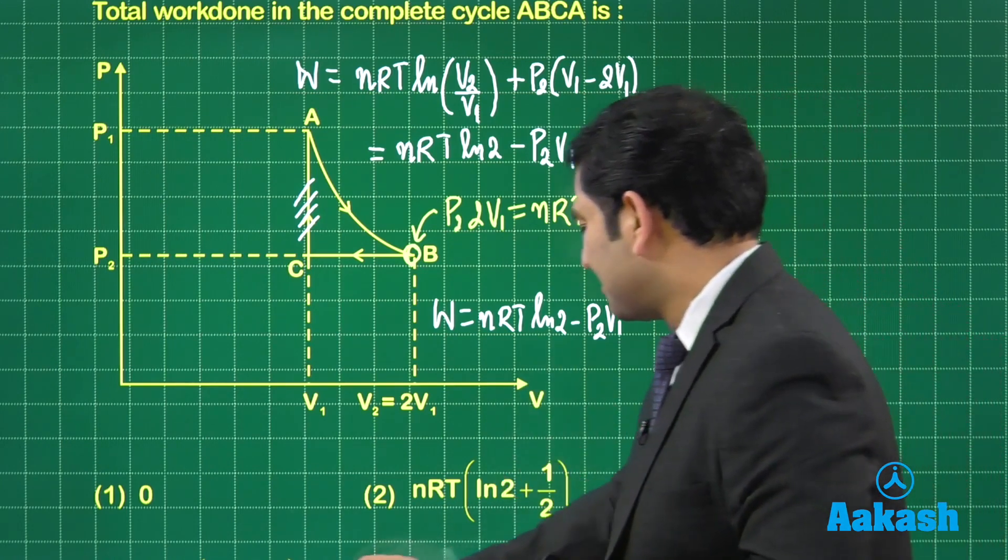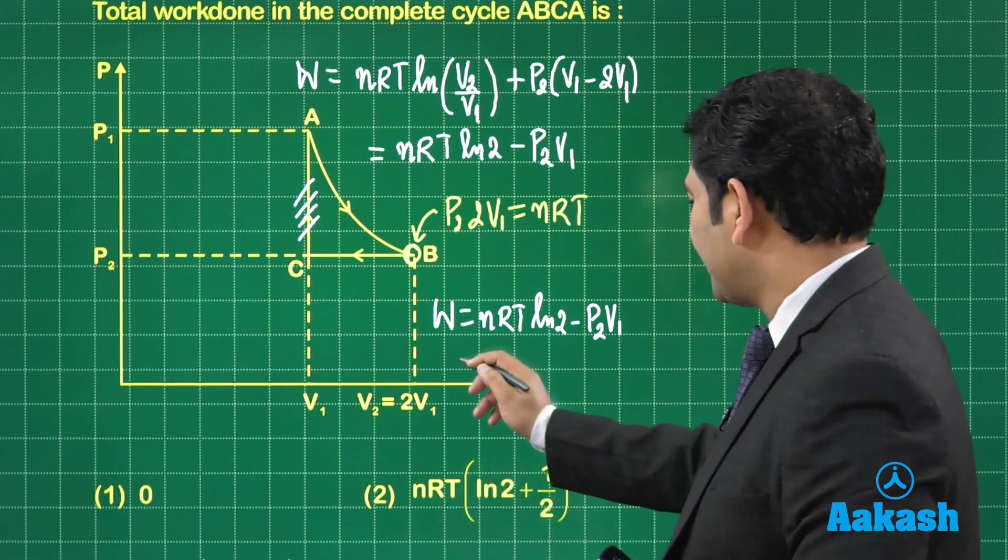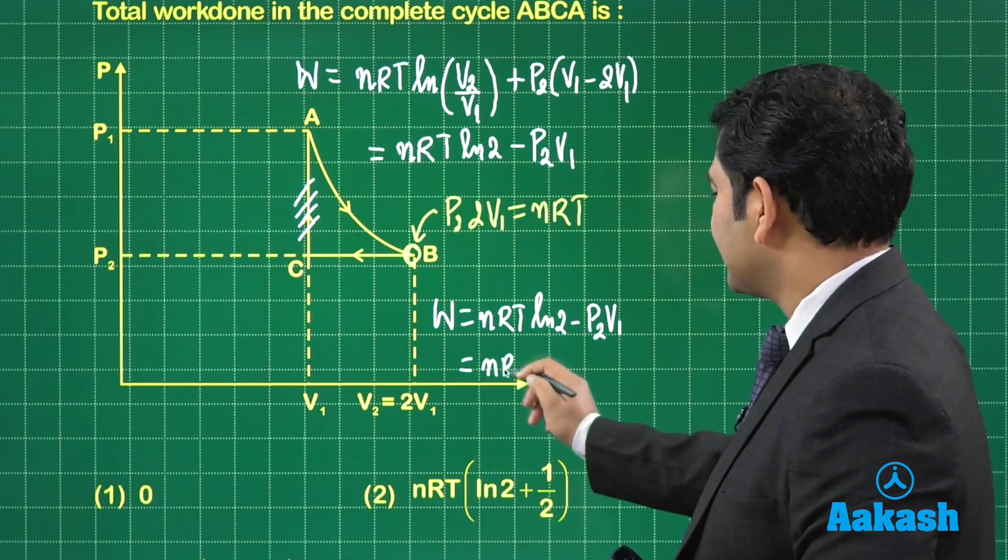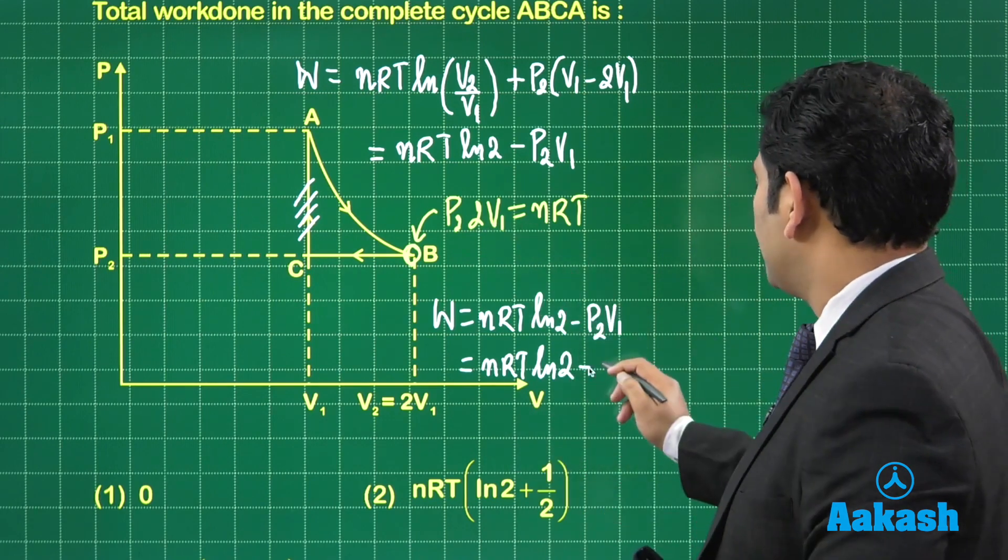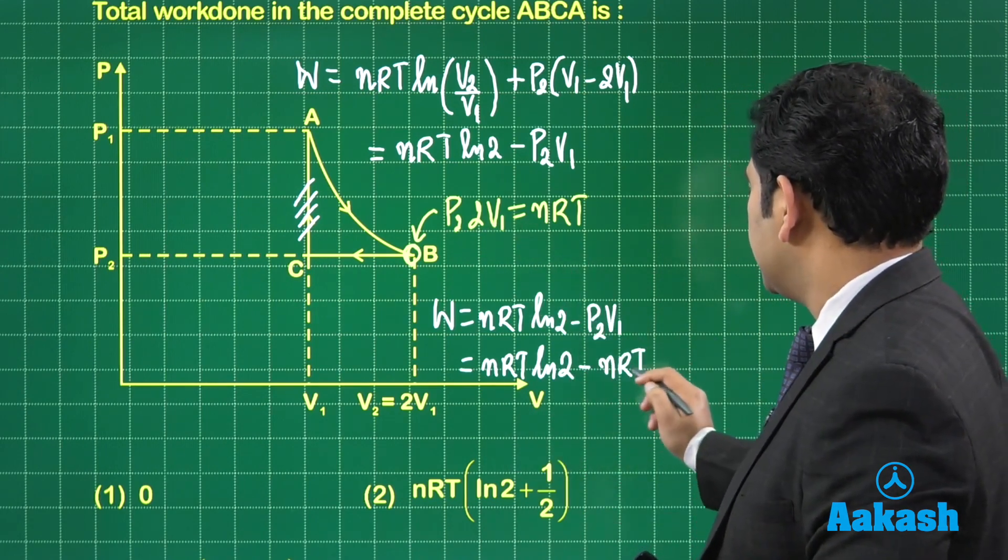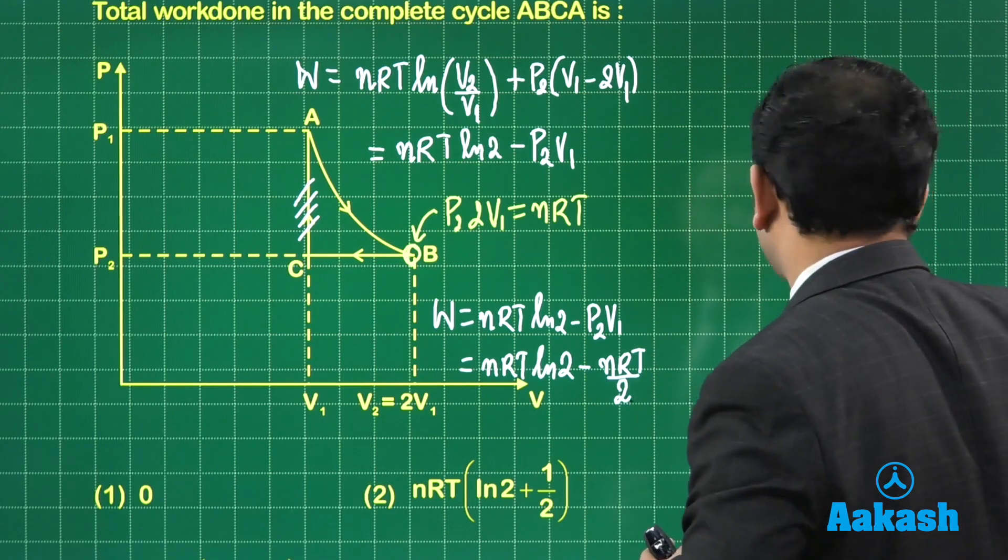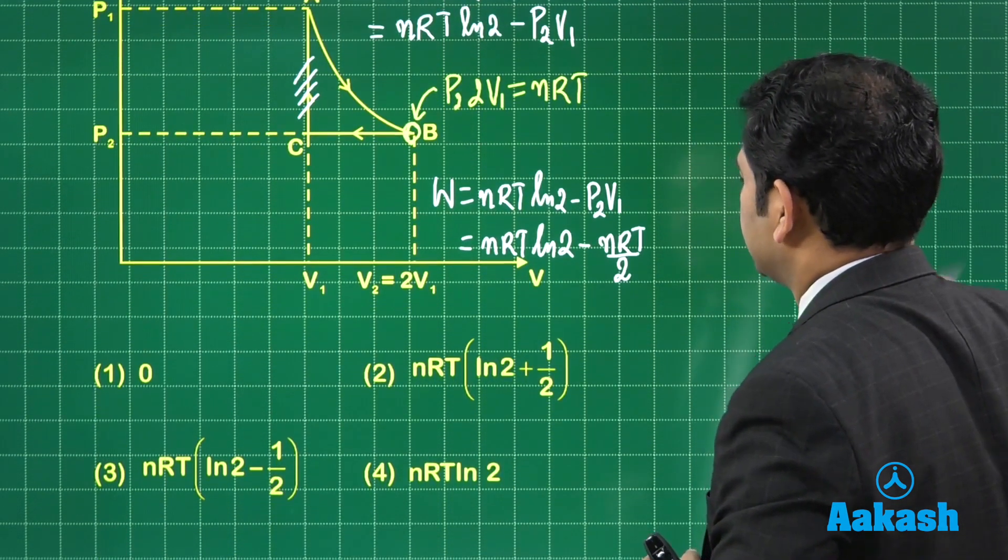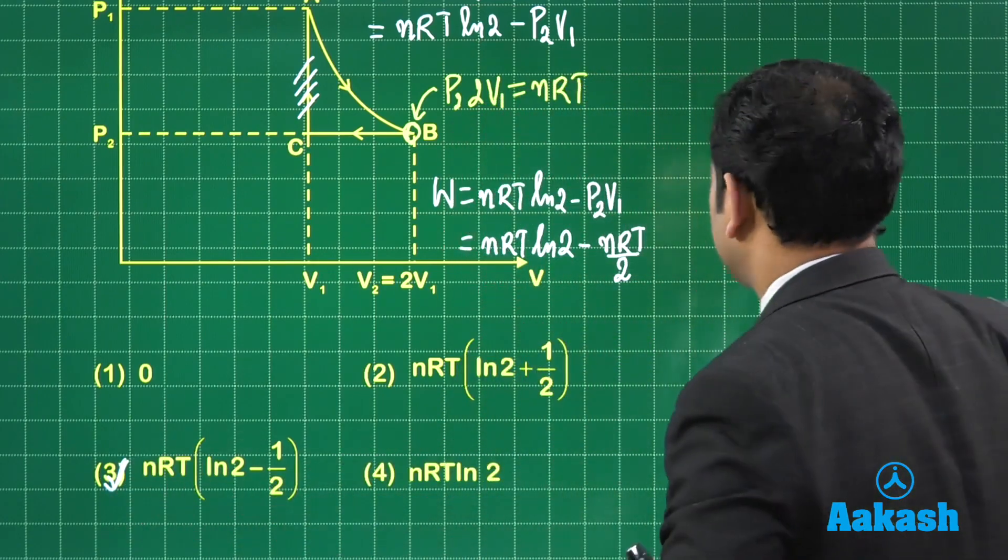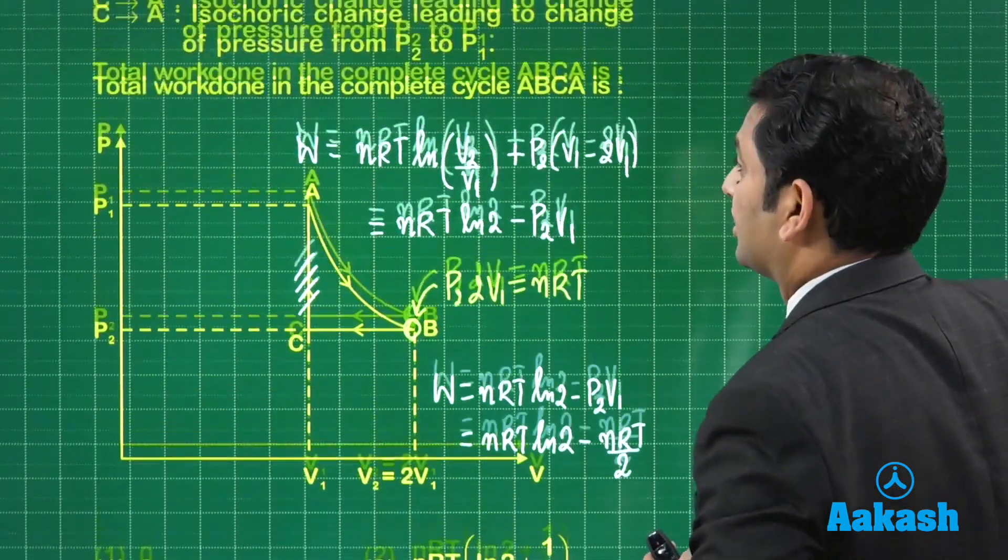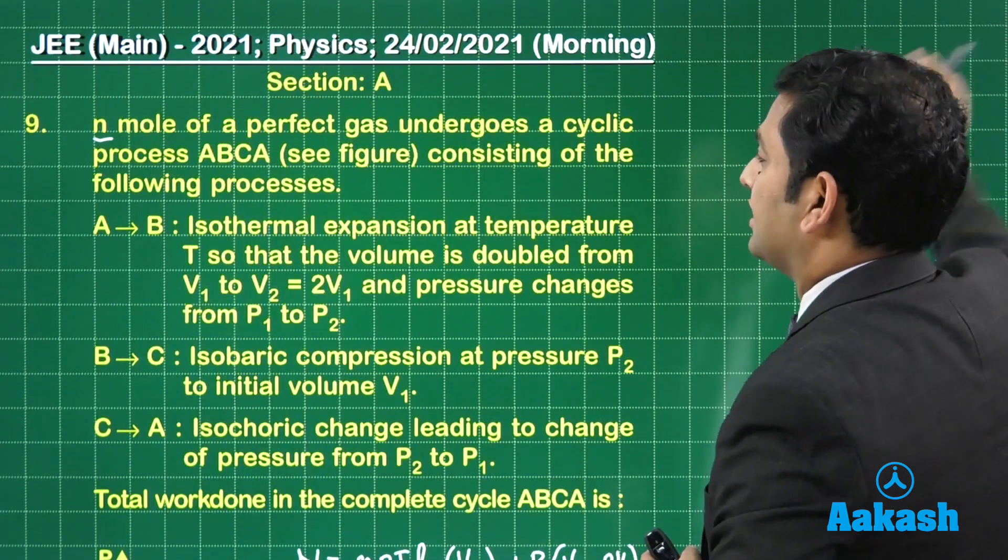This is the small shift we require. That is NRT natural log 2 minus P2V1 is NRT divided by 2. We have calculated the work done and it exactly matches with option number 3. That was about question number 9.